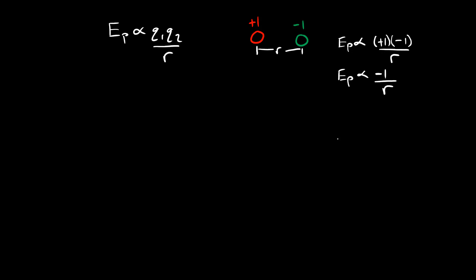Let's apply this to atomic structure using the same color code: positive charges will be red, negative charges will be green, and neutral particles will be purple.